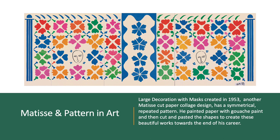Matisse used pattern a lot in his cut-paper collages, which he did at the end of his life, but he also used it in many of his paintings. He would have beautiful pieces of cloth and other elements with textile-like patterns. 'Large Decoration with Masks,' created in 1953, is another of Matisse's cut-paper collage designs with a symmetrical repeated pattern. He painted paper with gouache paint and then cut and pasted the shapes to create these beautiful works toward the end of his career.